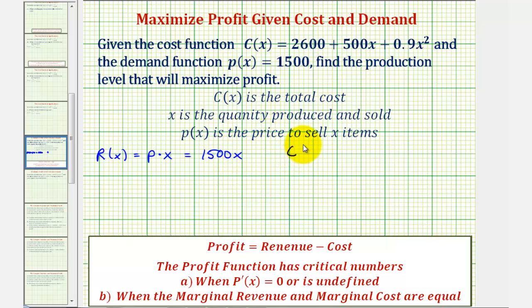We're also given the cost function C(x), which means our profit function P(x) would be equal to R(x), or 1500x, minus C(x). So the cost function—we'd have minus the quantity 2600 plus 500x plus 0.9x squared.